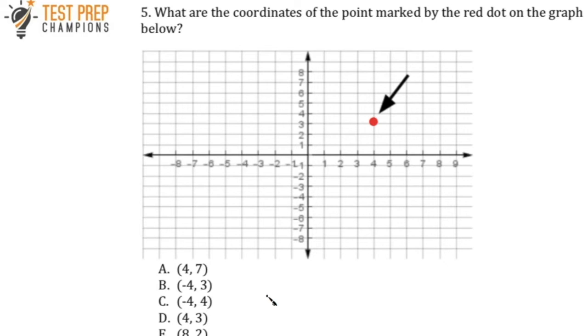The first thing that we want to know about reading graphs is that you've got this horizontal line here on a graph, which is called our x-axis. You've got the vertical line, or the line that goes up and down, which is the y-axis.